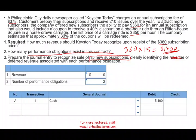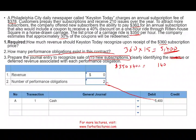Now we have to allocate that $5,400 across the two performance obligations. What is the standalone value of the coupon? The list price of the carriage ride is $350, and customers get a 40% discount, so the discount amount is $140. But only 30% of customers will redeem the coupon, so the standalone price of the coupon obligation is $42 per subscription. That is the standalone price for the coupon.